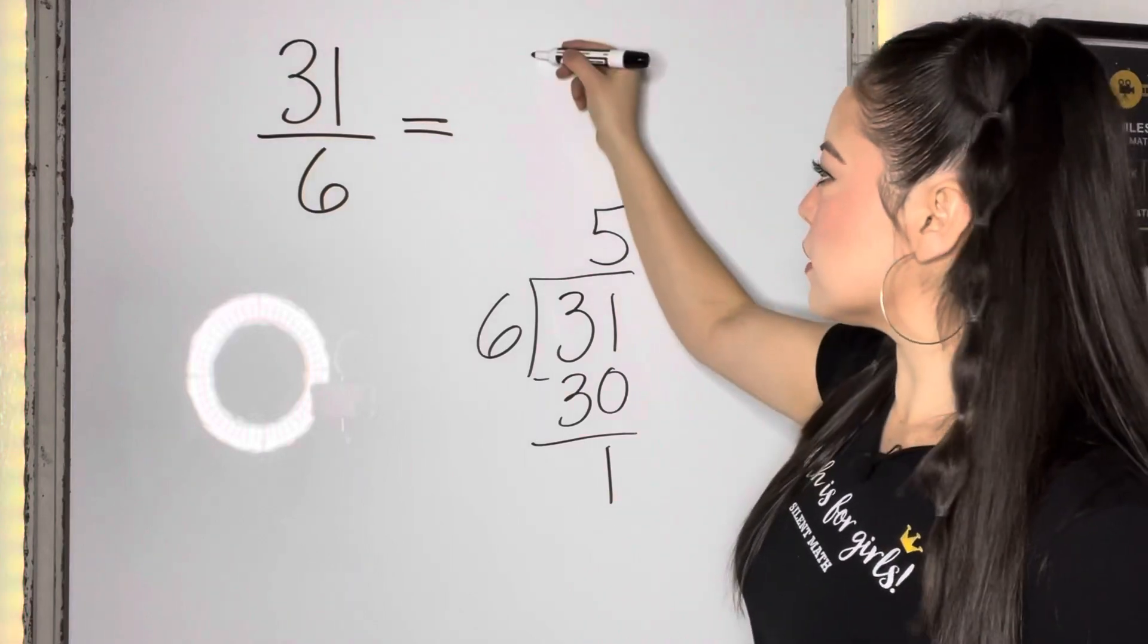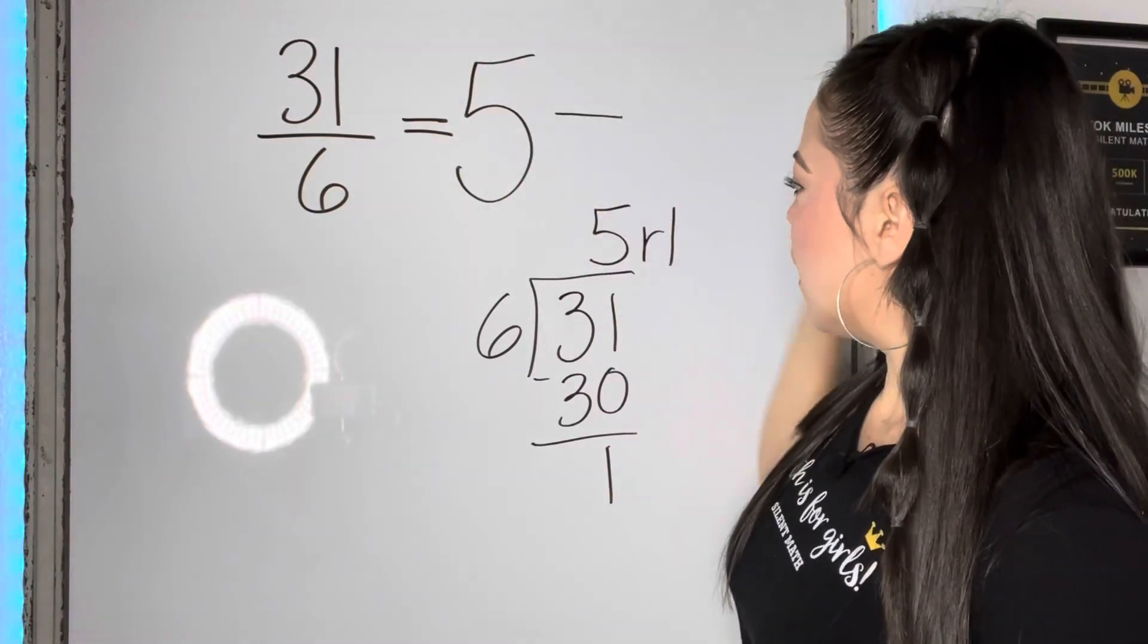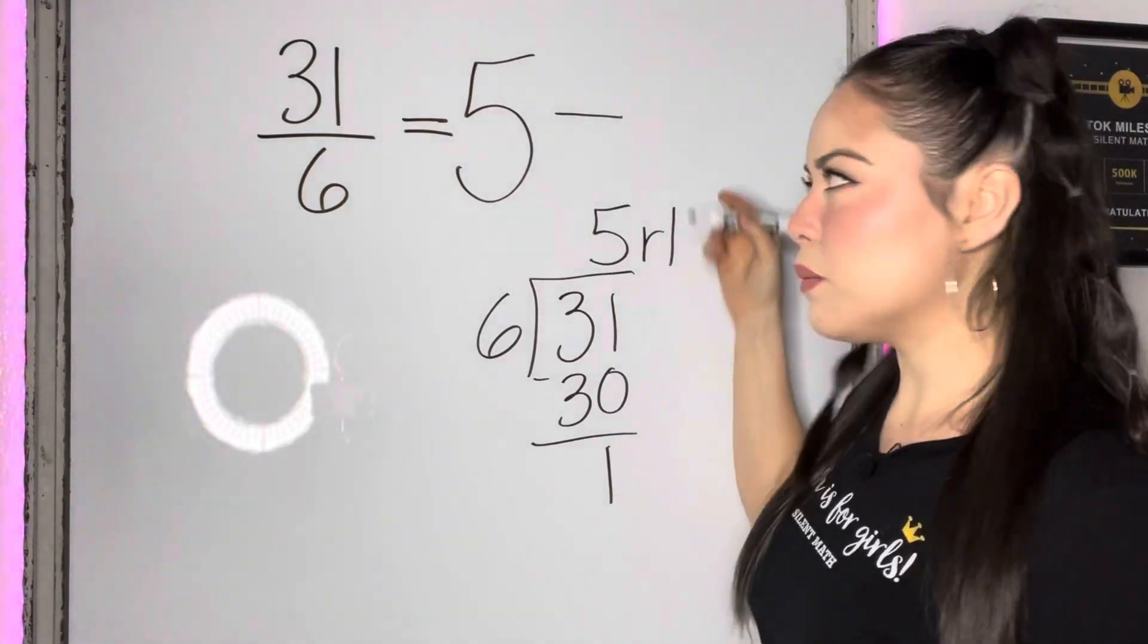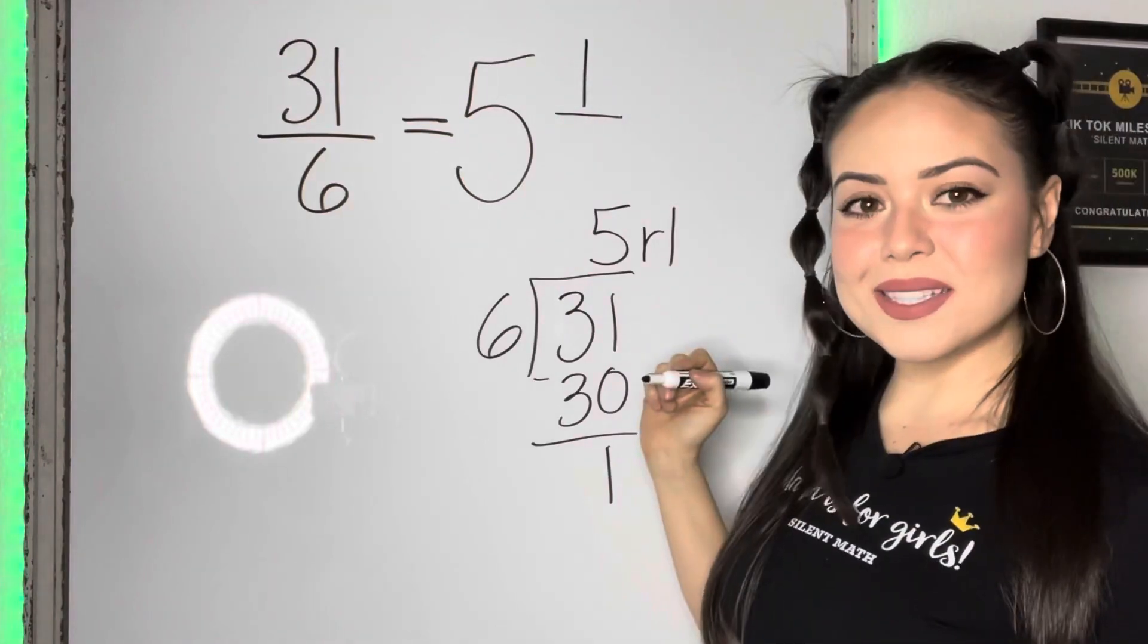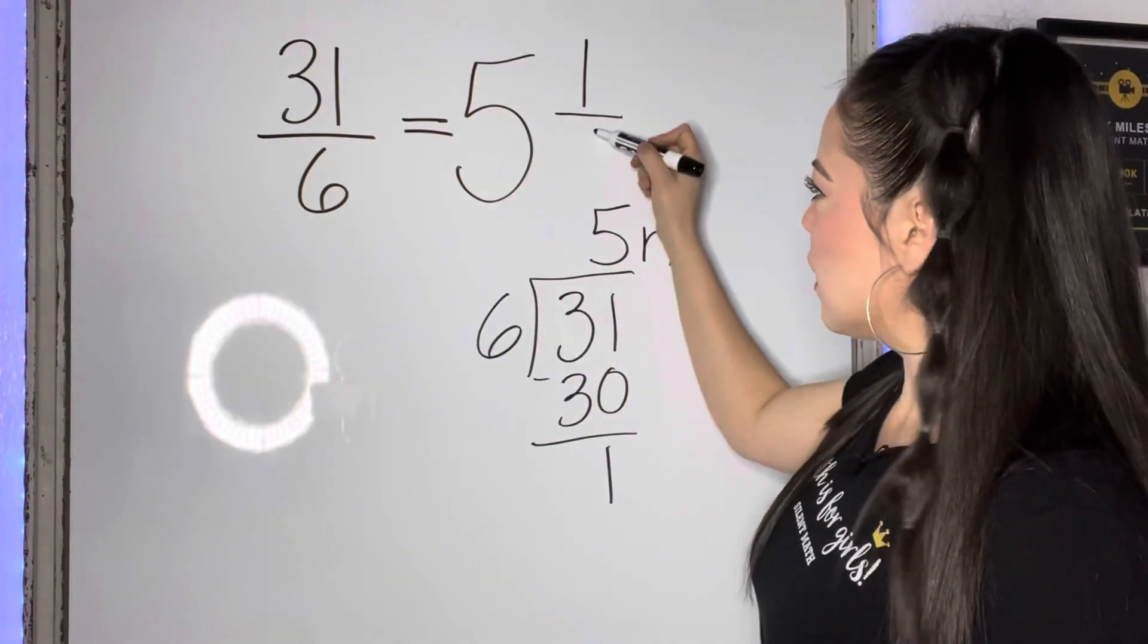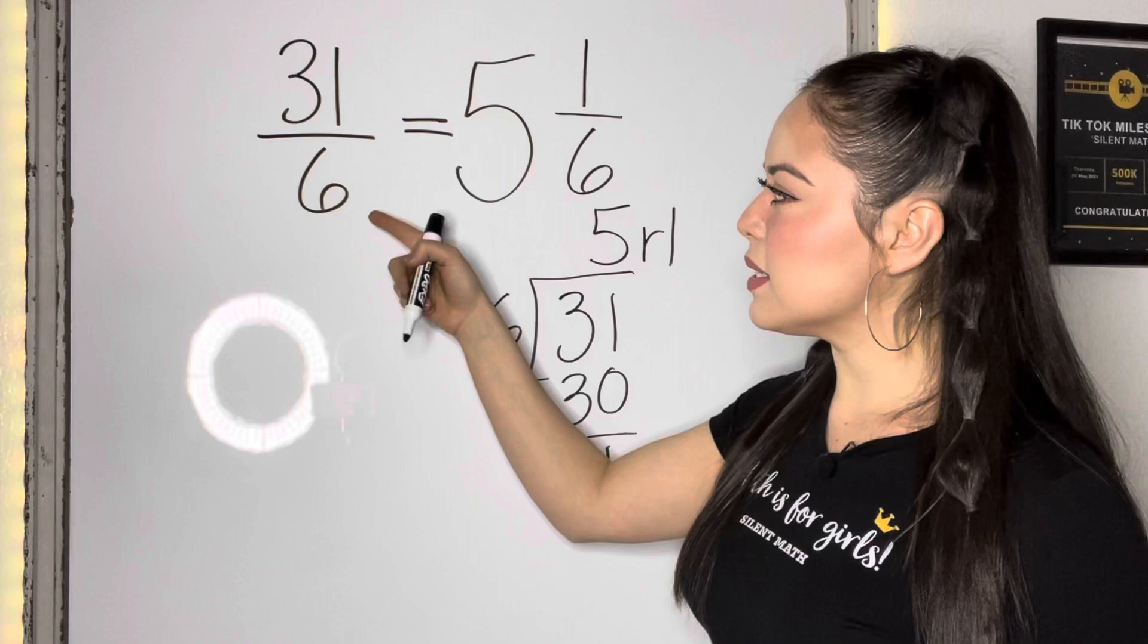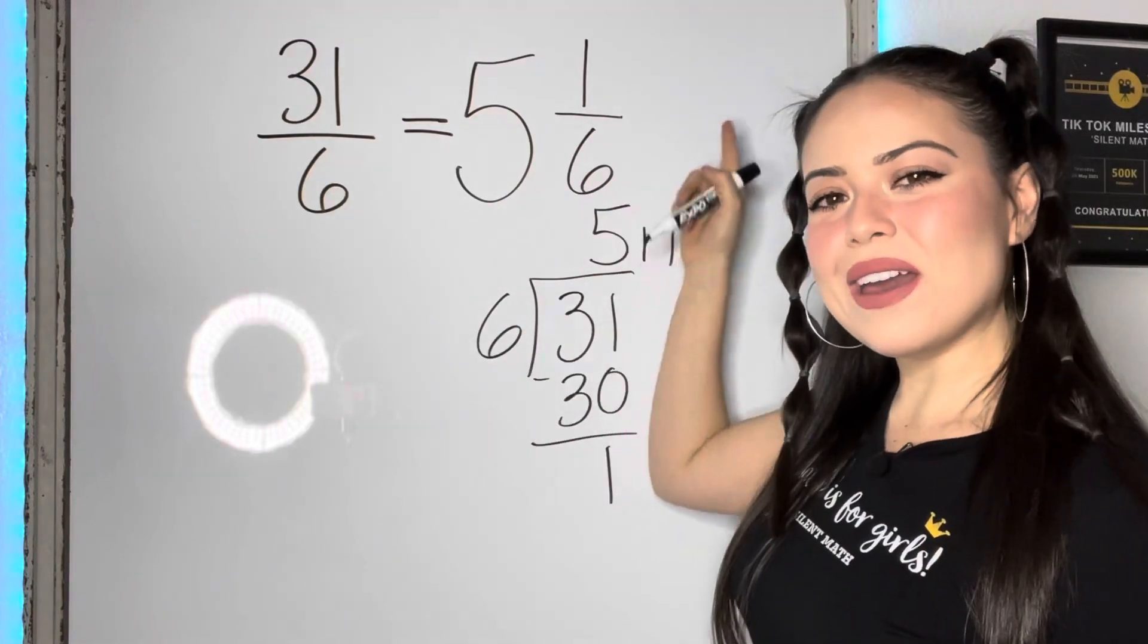Five will be the whole number of your mixed number. And your remainder one will be the numerator of your mixed number. And we're gonna copy that six onto here. So 31 sixths is equivalent to five and one sixths.